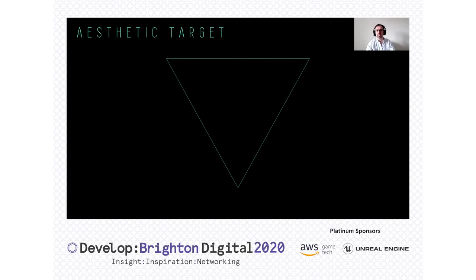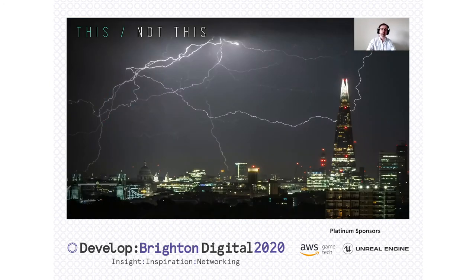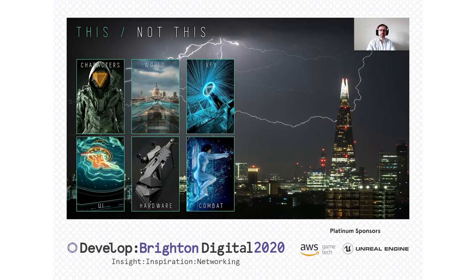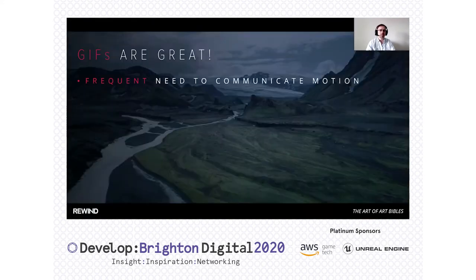Back at the start, I originally came up with a brief aesthetic target — my original one slide about what the world might look and feel like: clear and readable visuals, high tones and contrasts, and holographic effects with designer graphical corruption. Maybe we want to go beyond that as we start developing it, into this-and-not-this slides. Some people think they're a bit on the nose, but they can have their advantages. In this case, I've spelled out a few areas with their rough feel and then their counterparts of what it does not feel like. For instance, the VFX is going to look more like this than this cartoony style, or is the combat mechanic going to be cover-based or fluid and involve a great deal of movement? This segues nicely into GIFs, because we frequently need to communicate motion. A picture speaks a thousand words, so at 24 frames a second, that's not doing too badly.